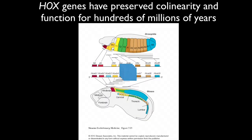Here we can see an embryonic fruit fly and an embryonic mouse. The Hox B1 gene, which is controlling the hindbrain of the mouse, is homologous to the lab gene, which is controlling the formation of the brain of the fly. Going back through the body, the sequence of Hox genes in the mouse is in the same linear sequence as the genes in the body of the fly.